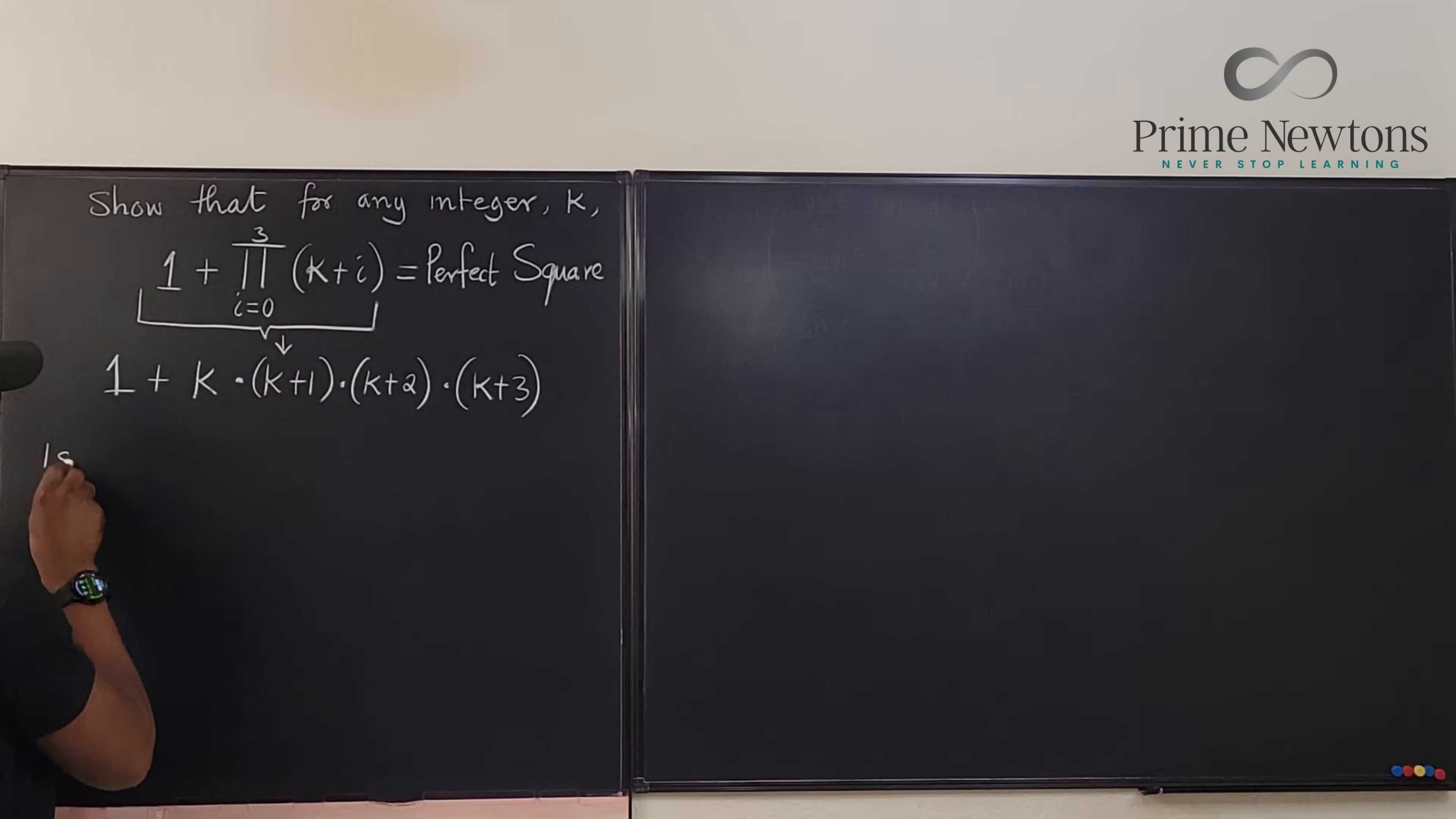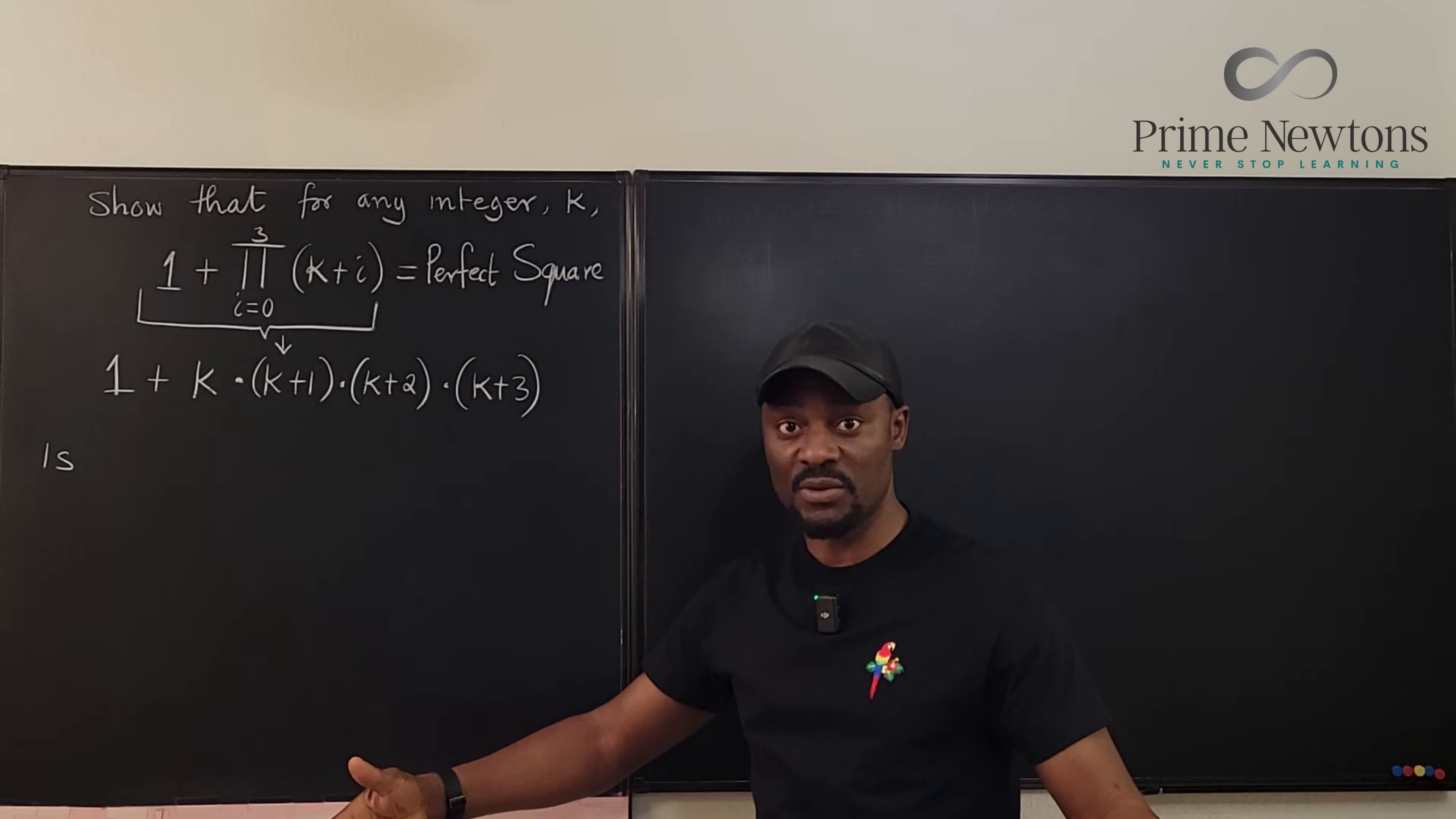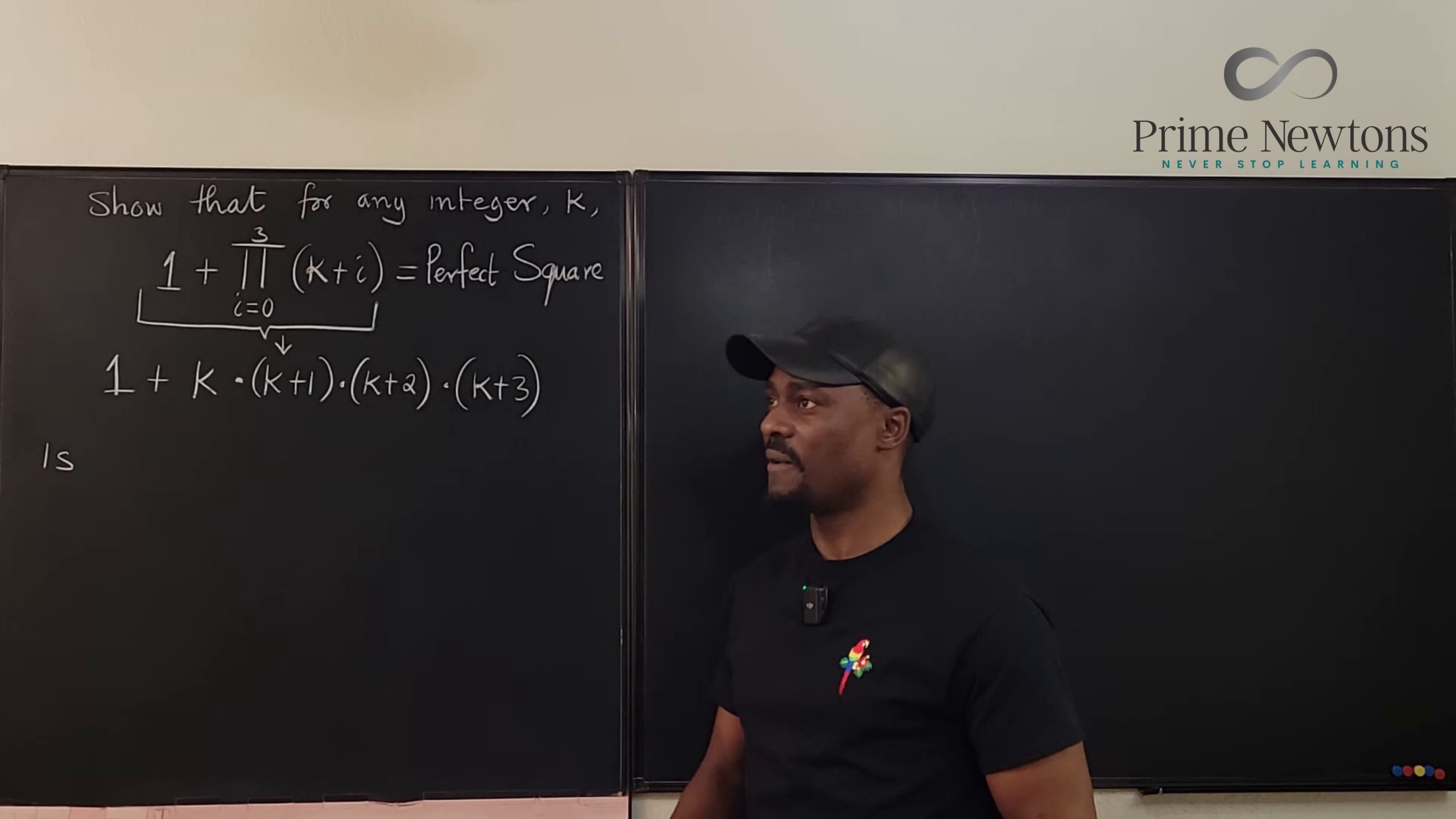Let's say it in another way. We're saying if one is added to the product of four consecutive integers, it is always a perfect square. That's the word problem expression. If one is added to the product of four consecutive integers, the result is always a perfect square. It's always true.